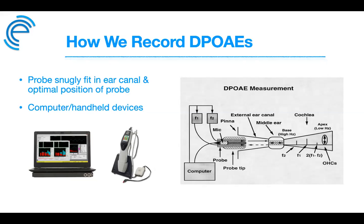The resulting sound is picked up by the microphone, digitized and processed by specialized hardware and software, with a signal averaging system combining multiple responses for accurate results. Both handheld and computer-based devices are available for diagnostic or screening use — handheld devices are common for screening due to portability. Deeper probe insertion attenuates ambient noise and delivers stimuli closer to the tympanic membrane.